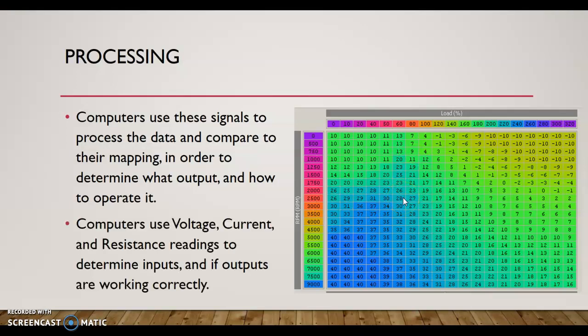Computers can use voltage, current, and resistance to determine the inputs and if outputs are working. The inputs can be in voltage—like those DMMs we talked about that are internal to the computer—it can be measuring current as an internal ammeter, or it can be measuring resistance with an internal ohmmeter. It's using all of that with basically Ohm's law calculations to determine those inputs, and then it can also monitor current on outputs to determine if they're working correctly.